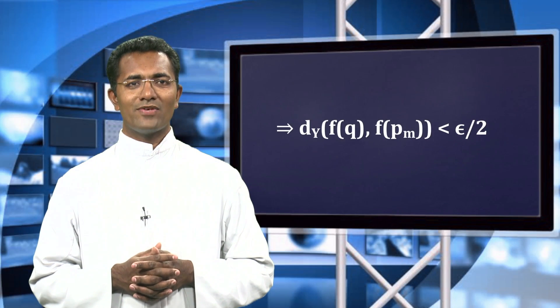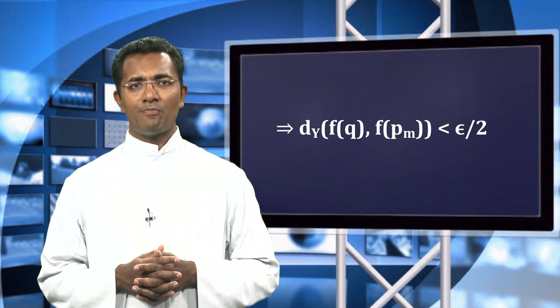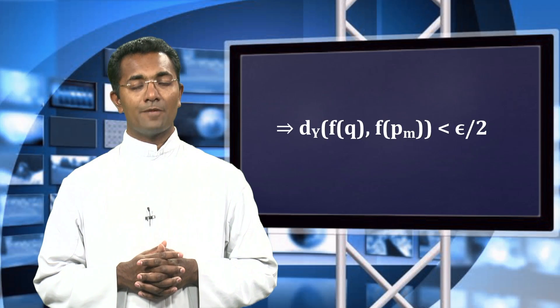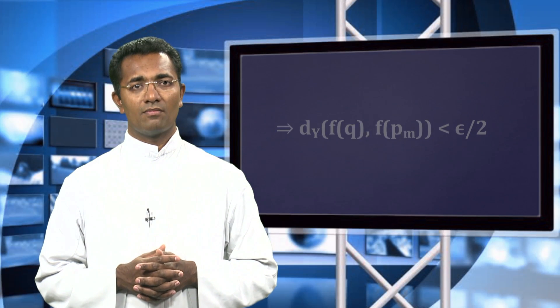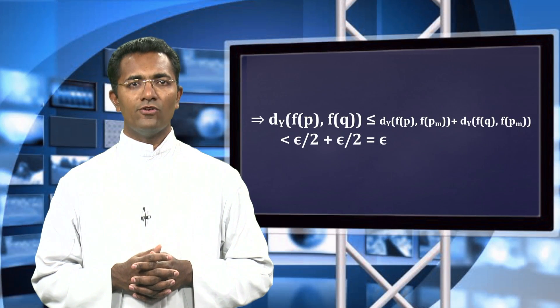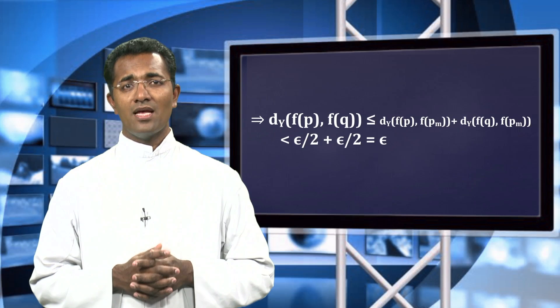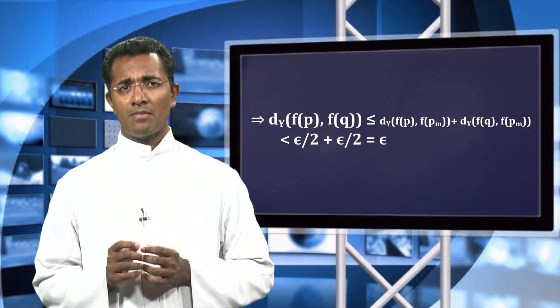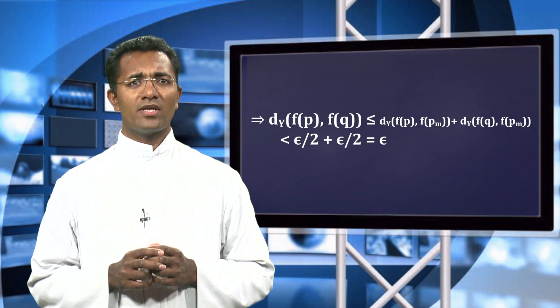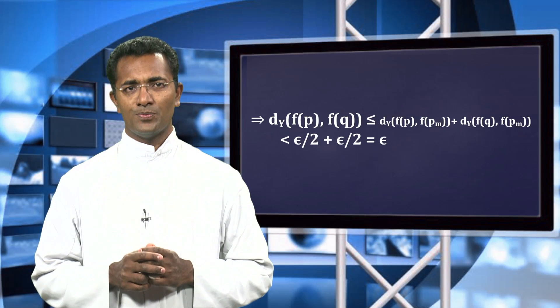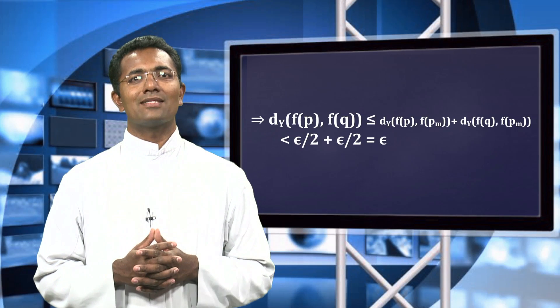Hence, again by applying continuity of f, we have that the distance between f(q) and f(p_m) is less than epsilon over 2. By the triangle inequality, the distance between f(p) and f(q) is less than or equal to the distance between f(p) and f(p_m) plus the distance between f(p_m) and f(q), which is of course less than epsilon.